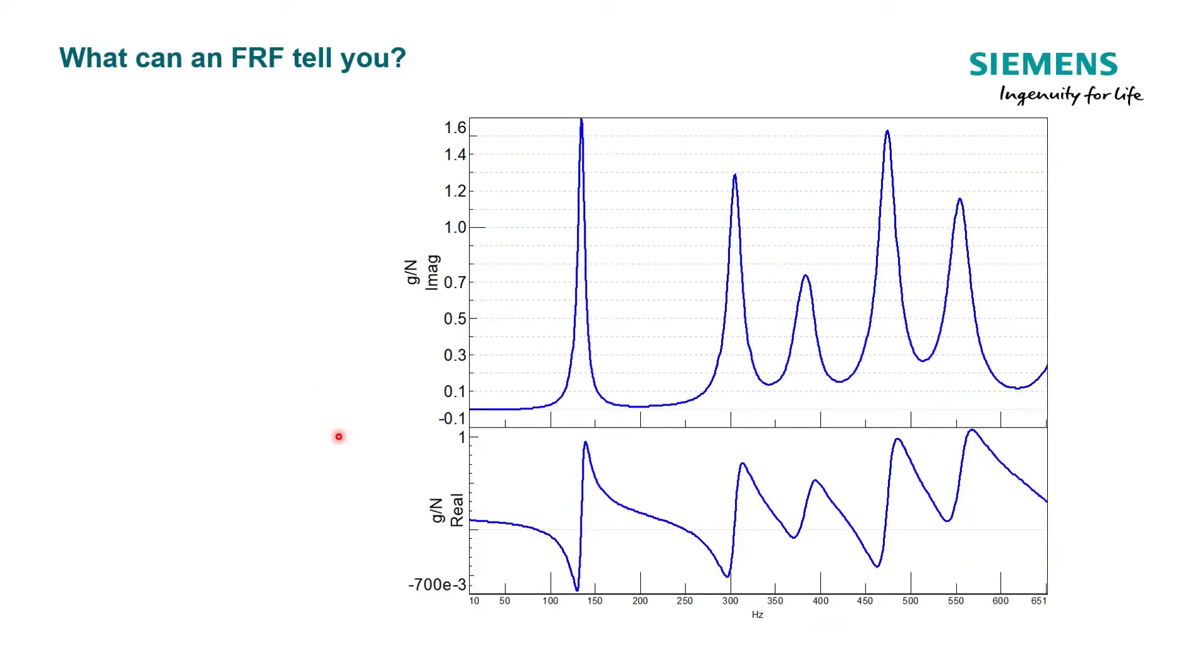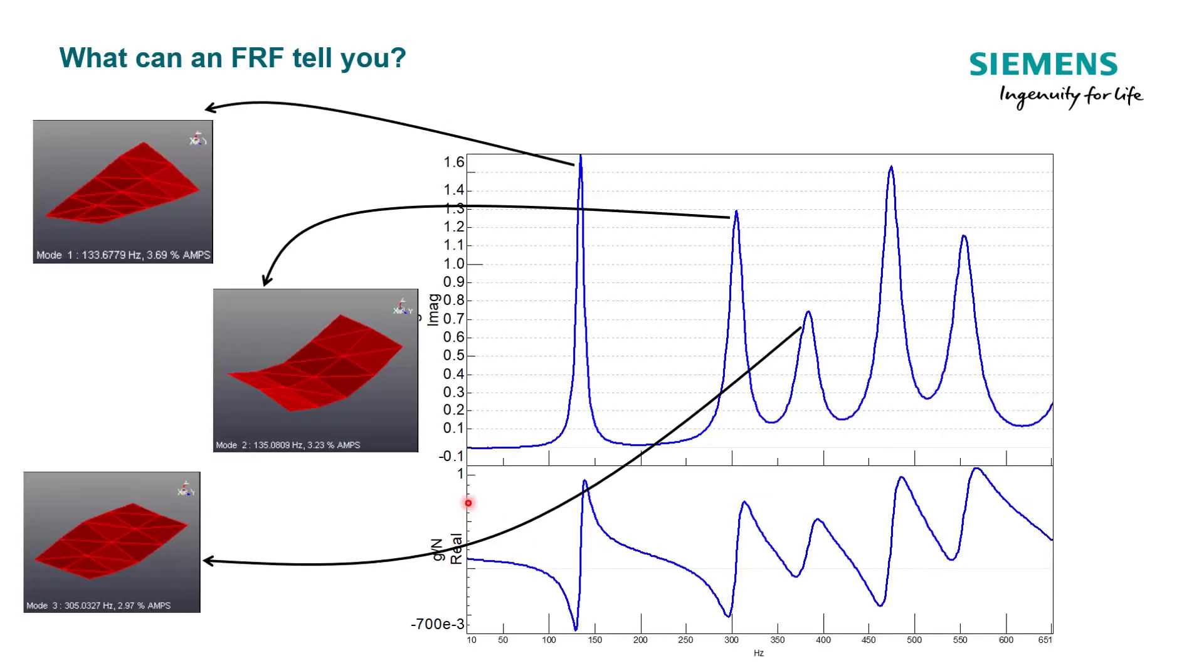So once I get these FRFs, well, what can they tell me? Well, we can list that out for you here. I'll get the resonant frequency information like we've discussed so far. I'll also get some damping information, and we'll talk more about that. And then with multiple FRFs, I can look at the phase information, and I can look at the relative phase across multiple measurement locations to see how the structure is moving. So I can look at the peaks.